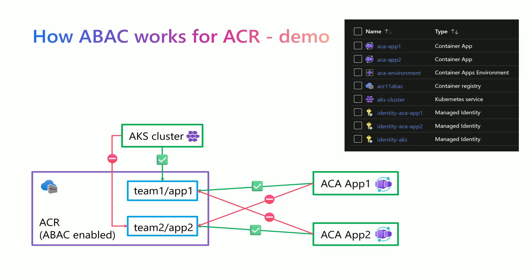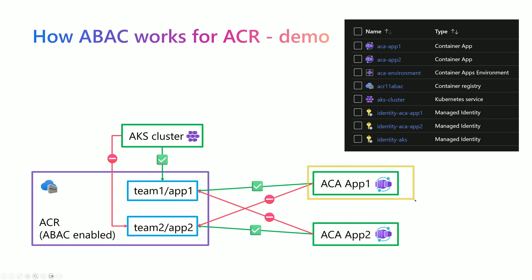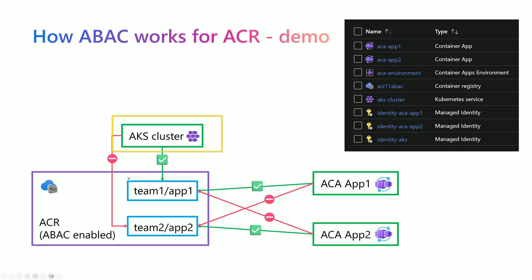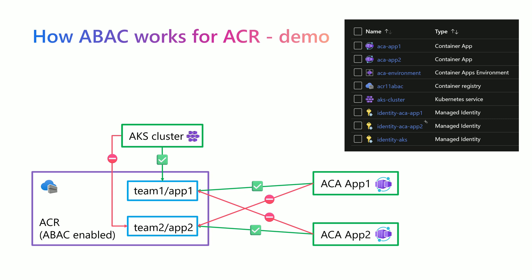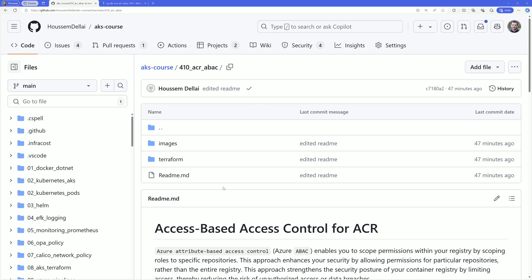Follow along to see a demonstration of how to use ABAC for ACR. In this demonstration, you will learn how RBAC assignments work with ABAC in Azure Container Registry. We will create an Azure Container Registry that contains two repositories for app one and app two, then create two container apps — the first should have access only to app one, and the second only to app two. We'll also create an AKS cluster that has access to one repository but not the other, using Azure managed identities. You can follow along using this GitHub repository at AKS-course/410-ACR-ABAC.